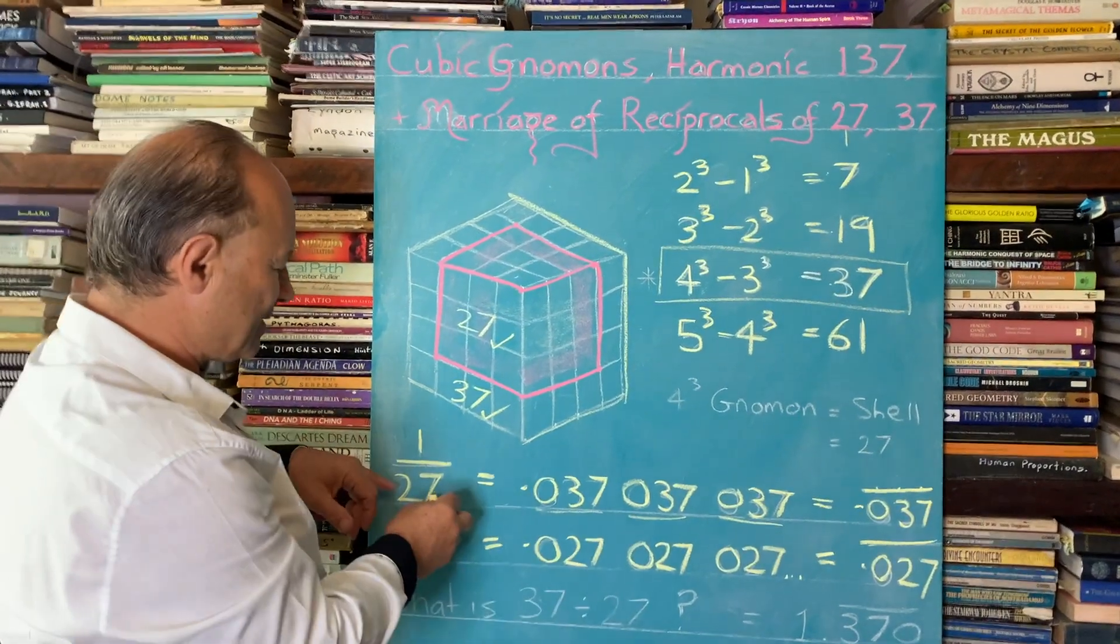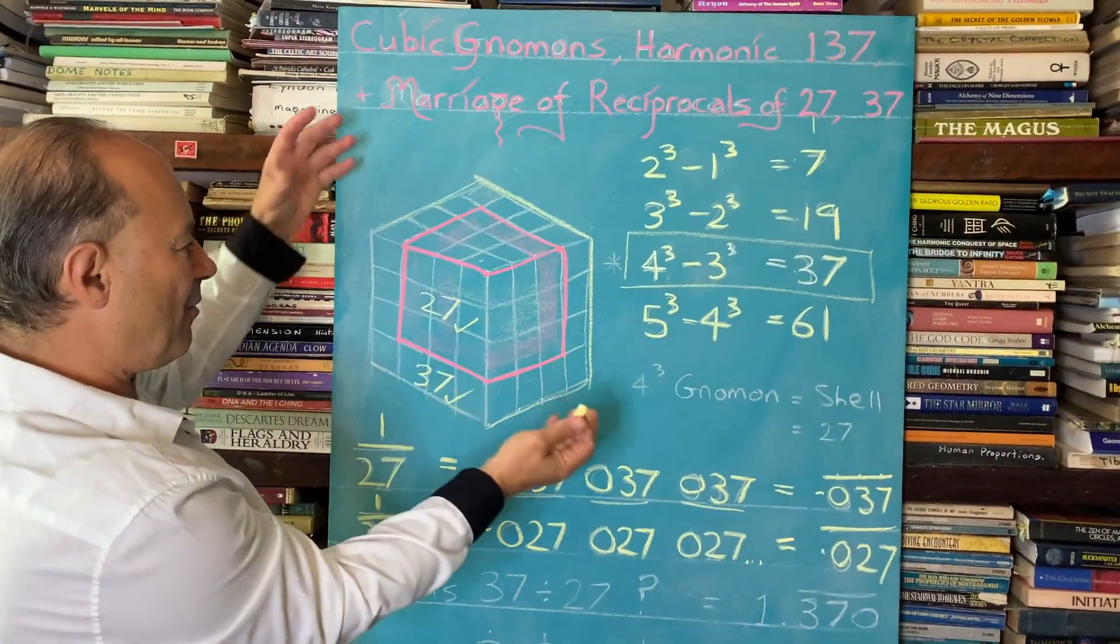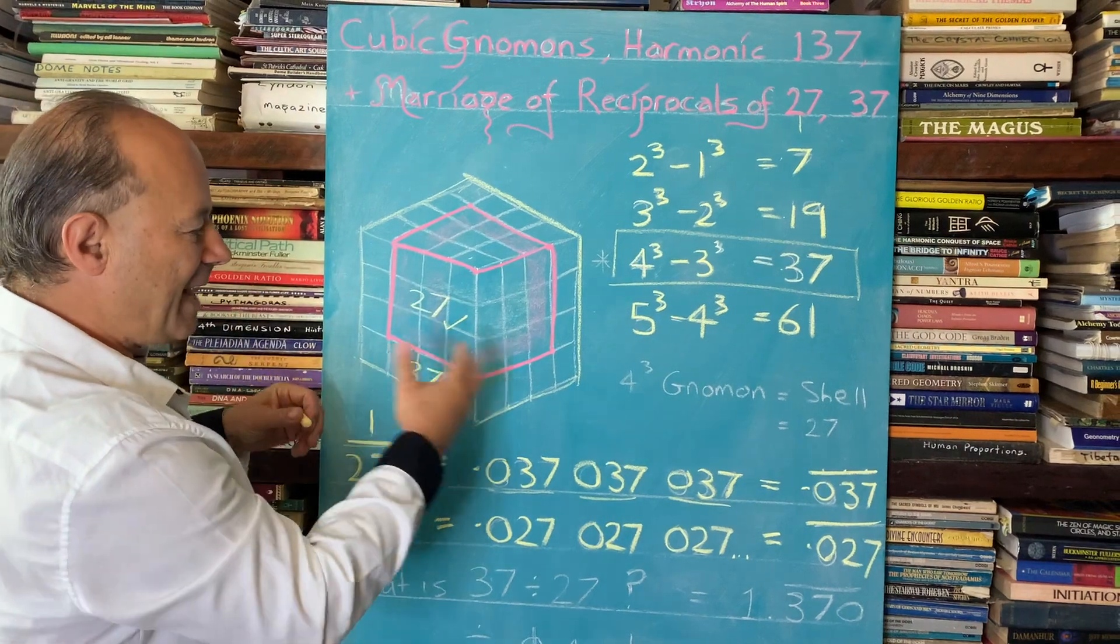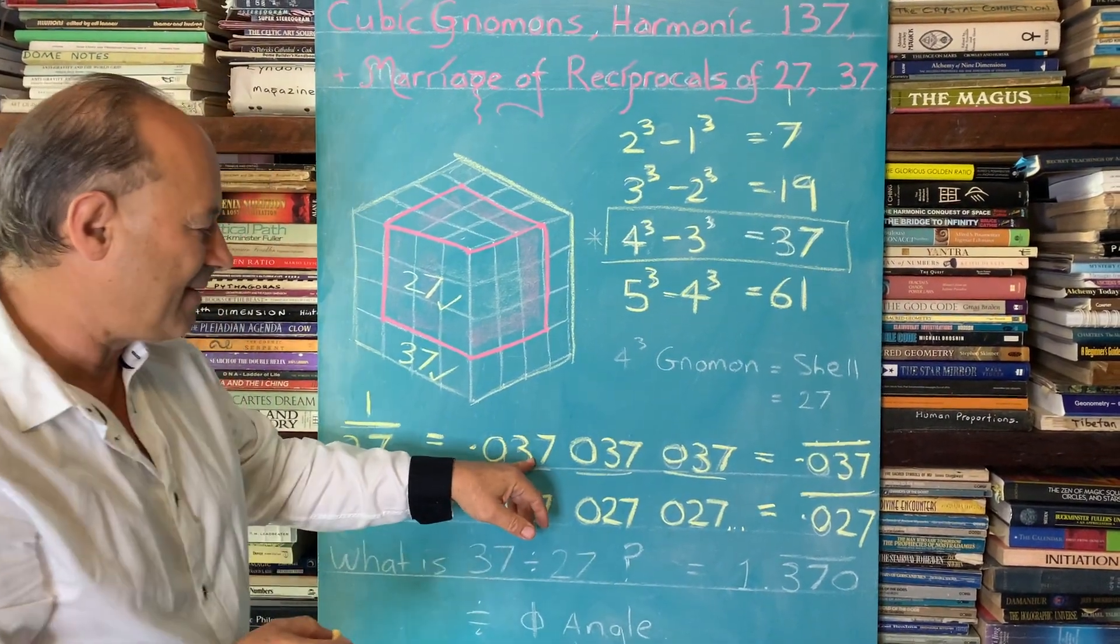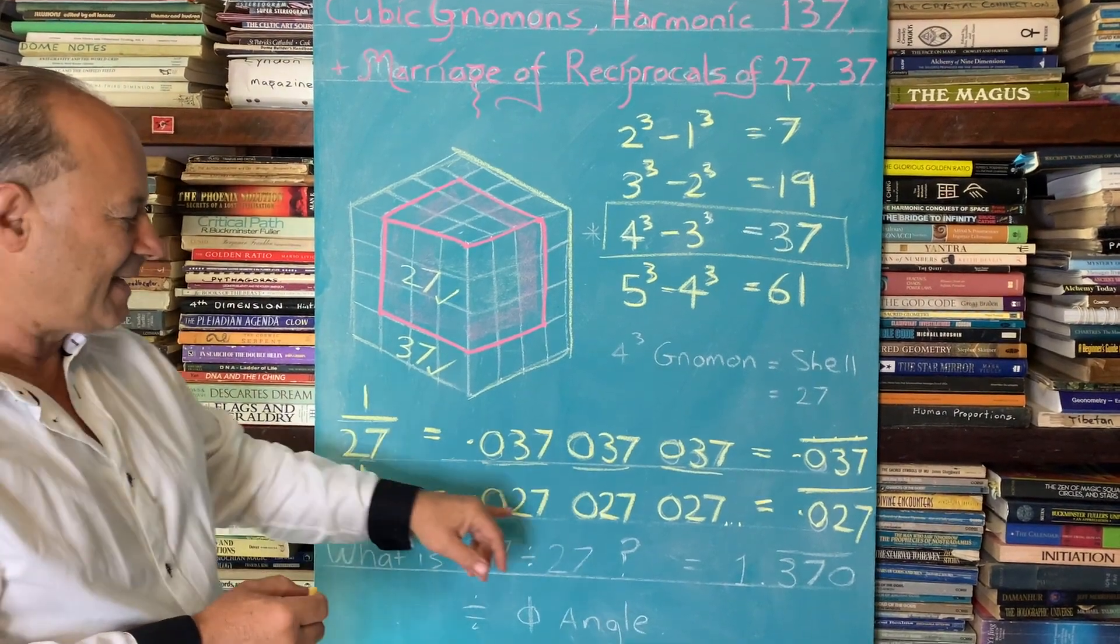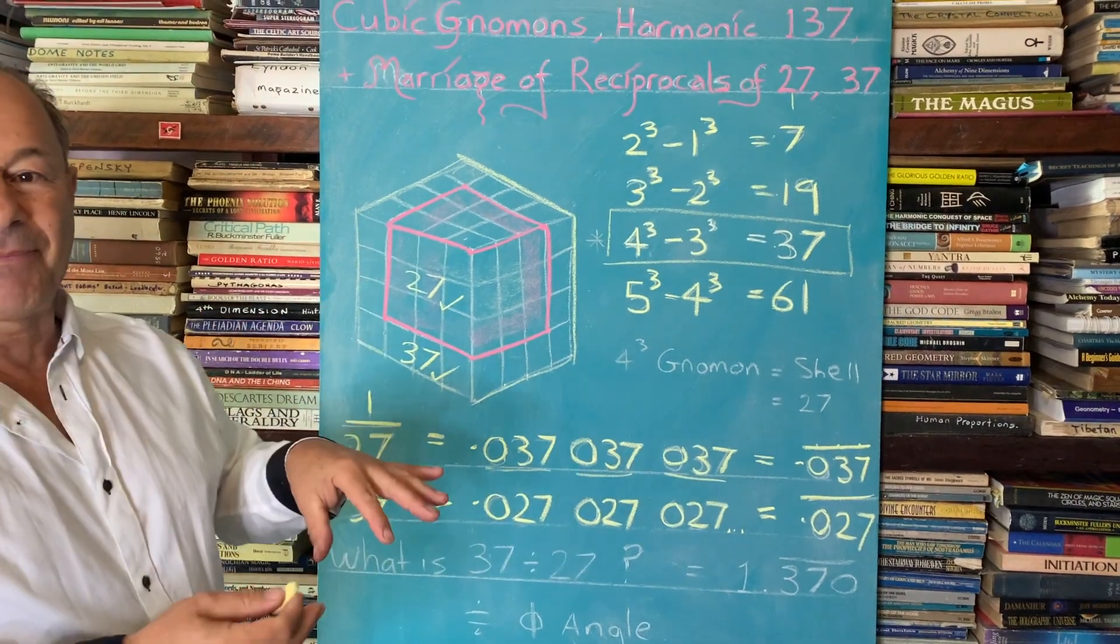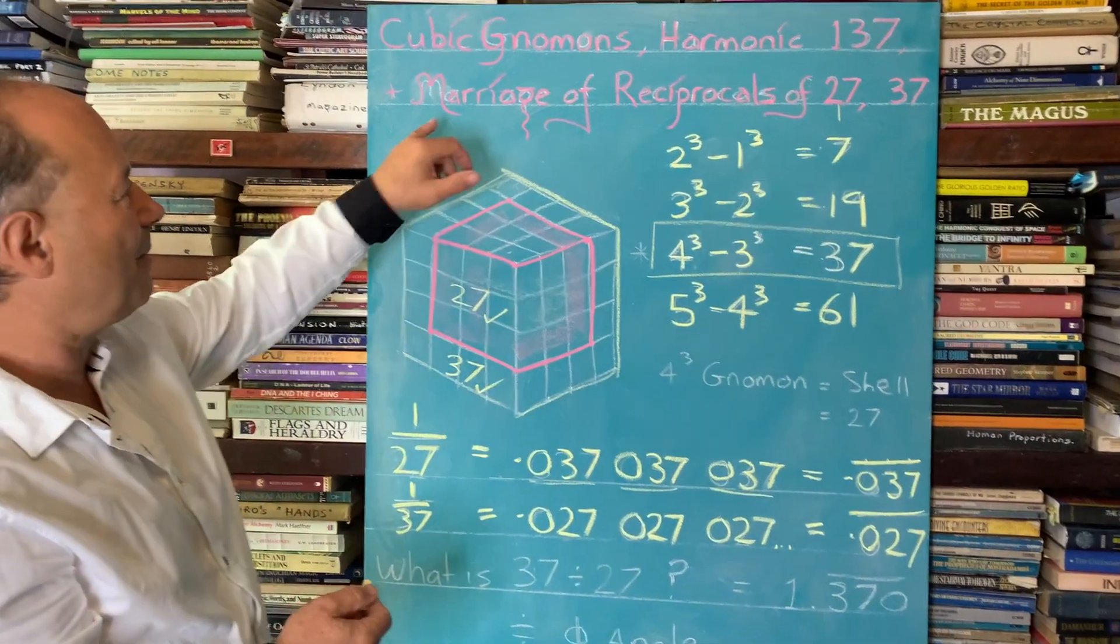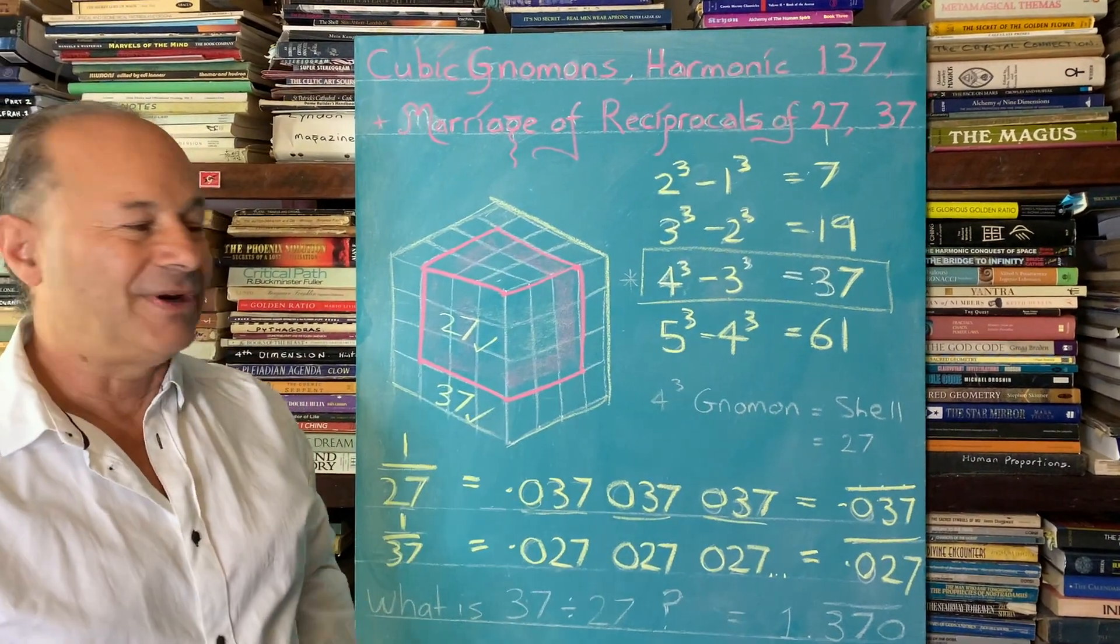So it's interesting that each of these numbers, the 27 and the 37 that form this whole structure contain one another. It's kind of a marriage because 27 is based on the 37 and the decimalization of 37 contains its counterpart 27. So they're like a coupling. It's very interesting. And that's why I'm calling it the marriage of the reciprocals 27 and 37.